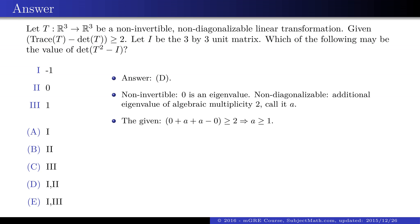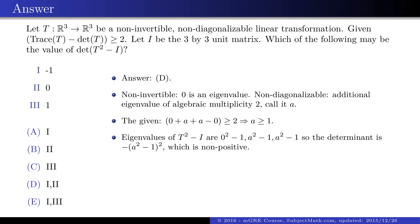The trace is the sum of the eigenvalues and the determinant is the product of them, 0 in this case. We get this relation on A. We have a formula for the eigenvalues of a polynomial of a transformation. Since we have all the eigenvalues with multiplicities, their product is now the new determinant, which must be a non-positive number.